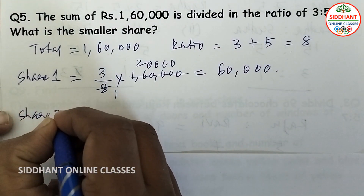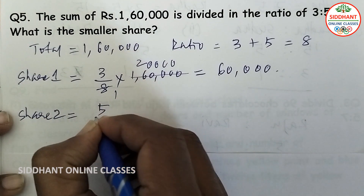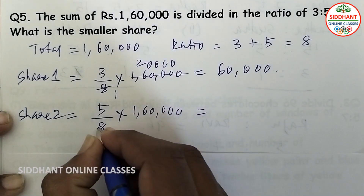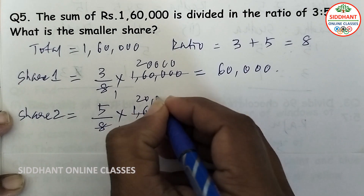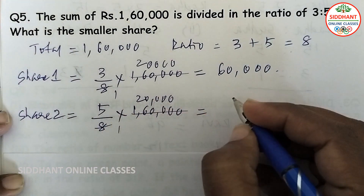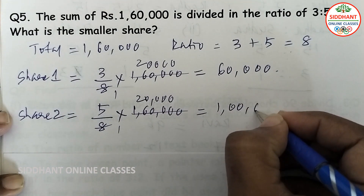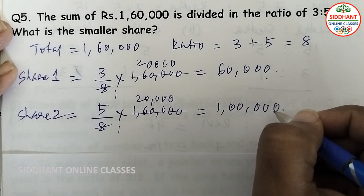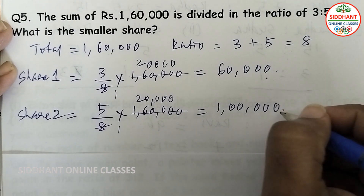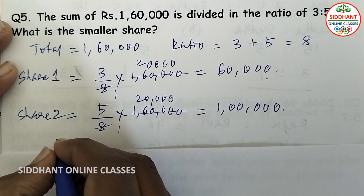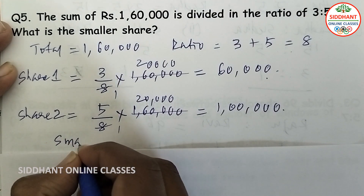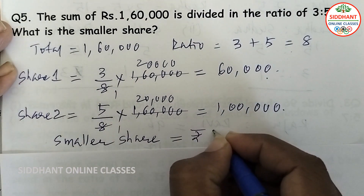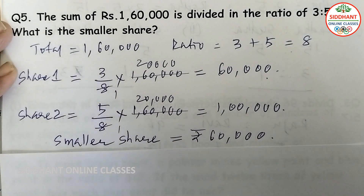So the smaller share is rupees 60,000. Share 2 is 5 parts out of 8 parts, multiplied by 1,60,000. That gives 20,000 into 5, which equals rupees 1,00,000. So the smaller share equals rupees 60,000 and the bigger share is rupees 1,00,000.